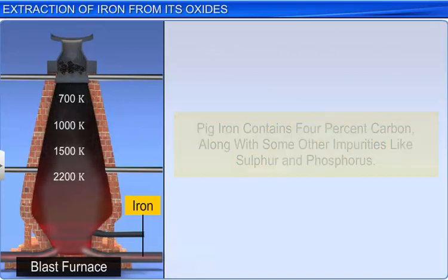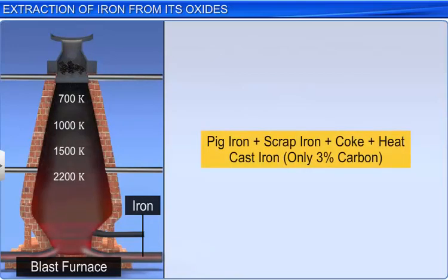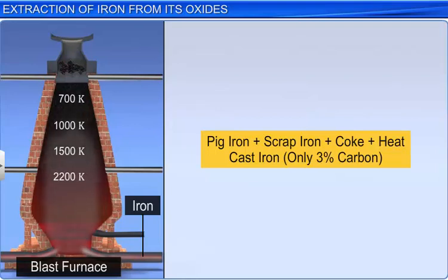Pig iron is melted with scrap iron and coke in the presence of hot air to form cast iron, which contains only 3% carbon. It is hard but brittle.